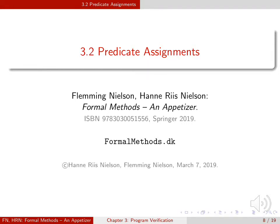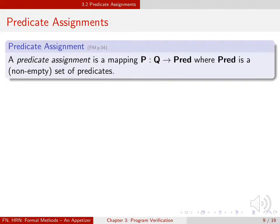In this section we show how to use predicates to prove the correctness of a program. We need to assign predicates to each node in the program graph. This gives rise to the notion of a predicate assignment. It maps each node to a predicate.